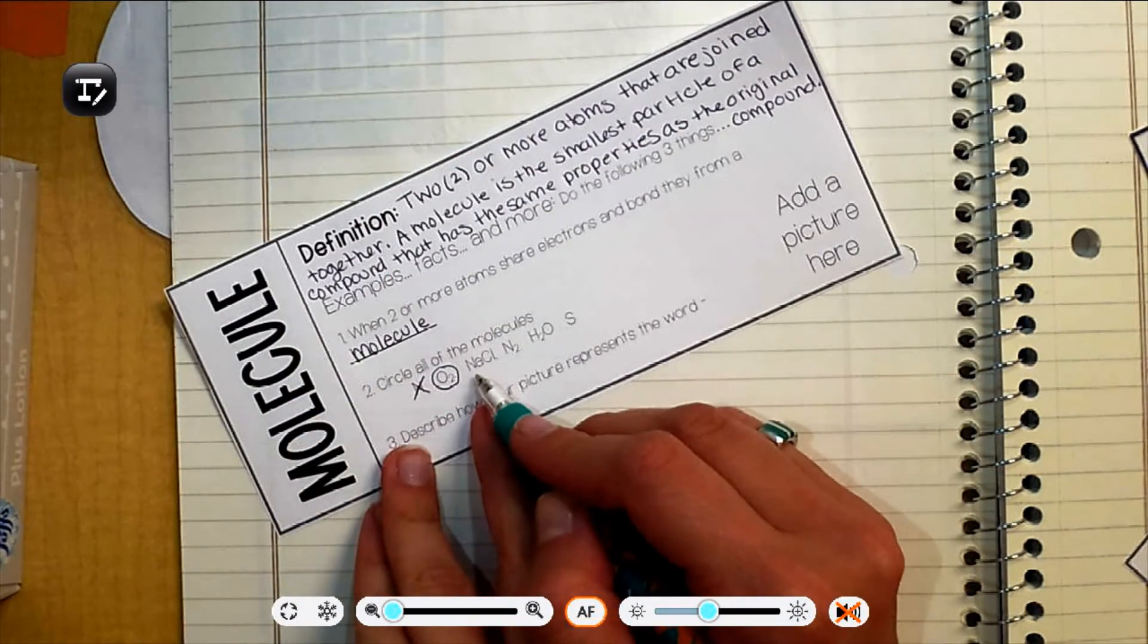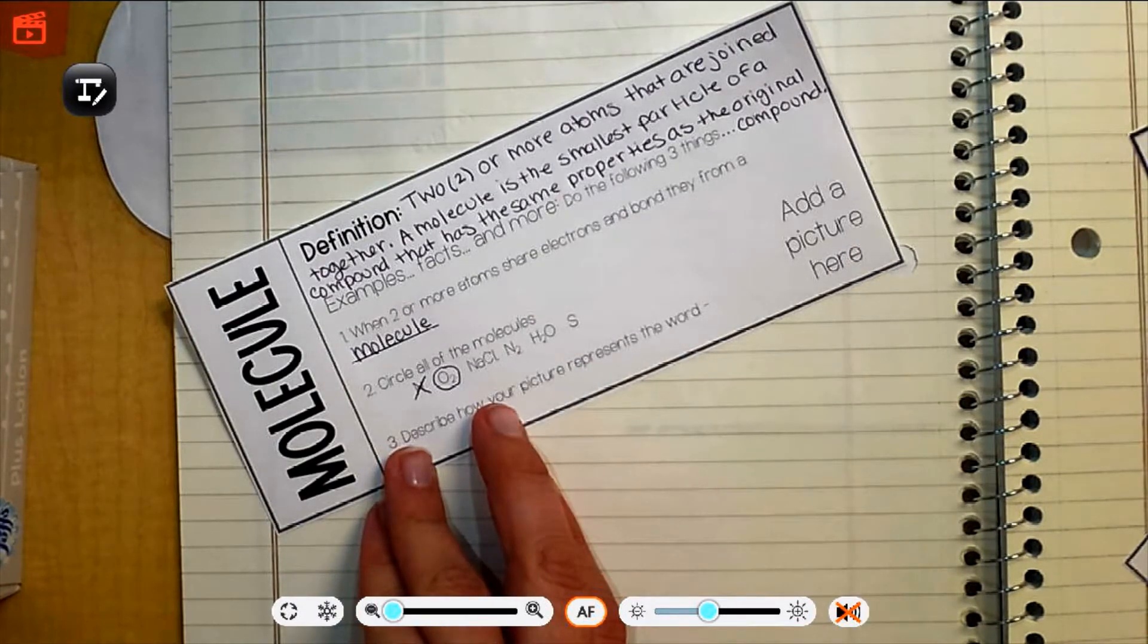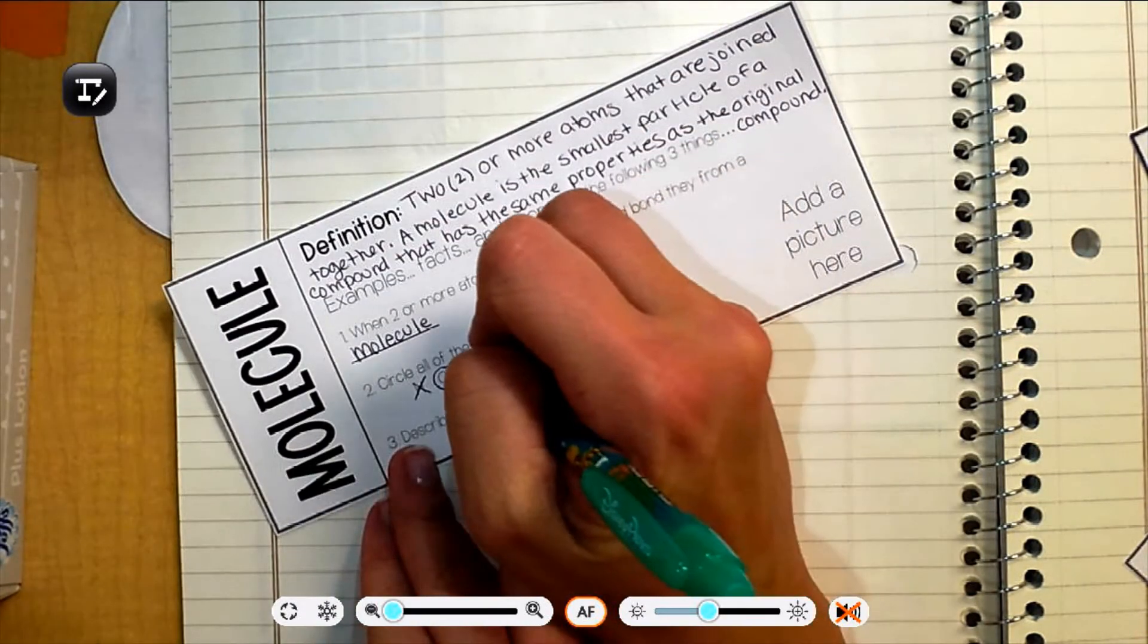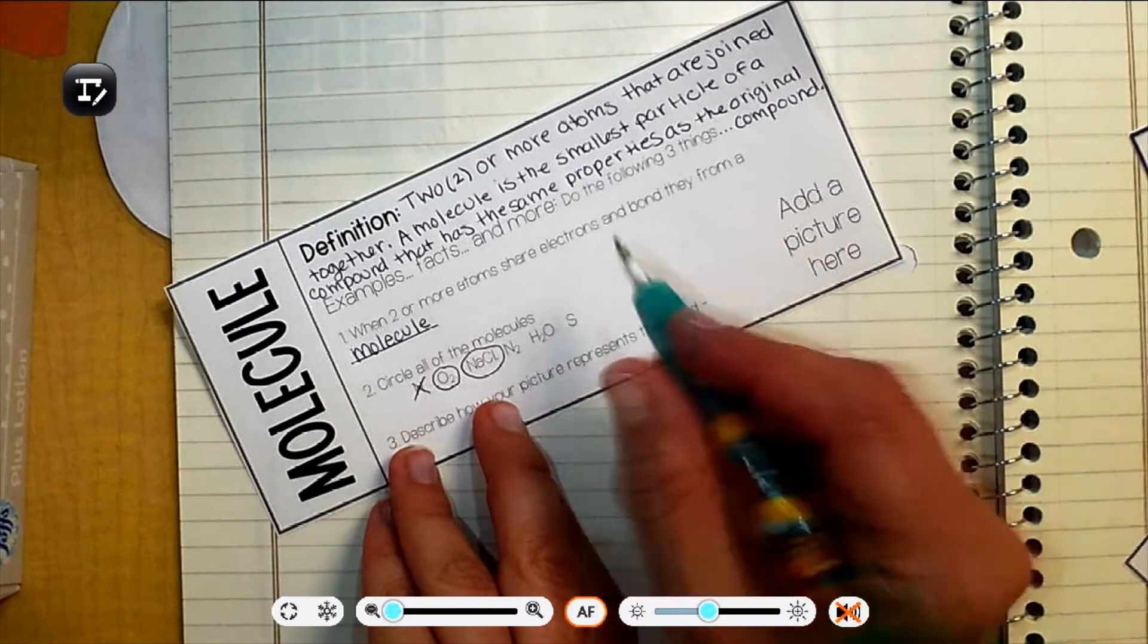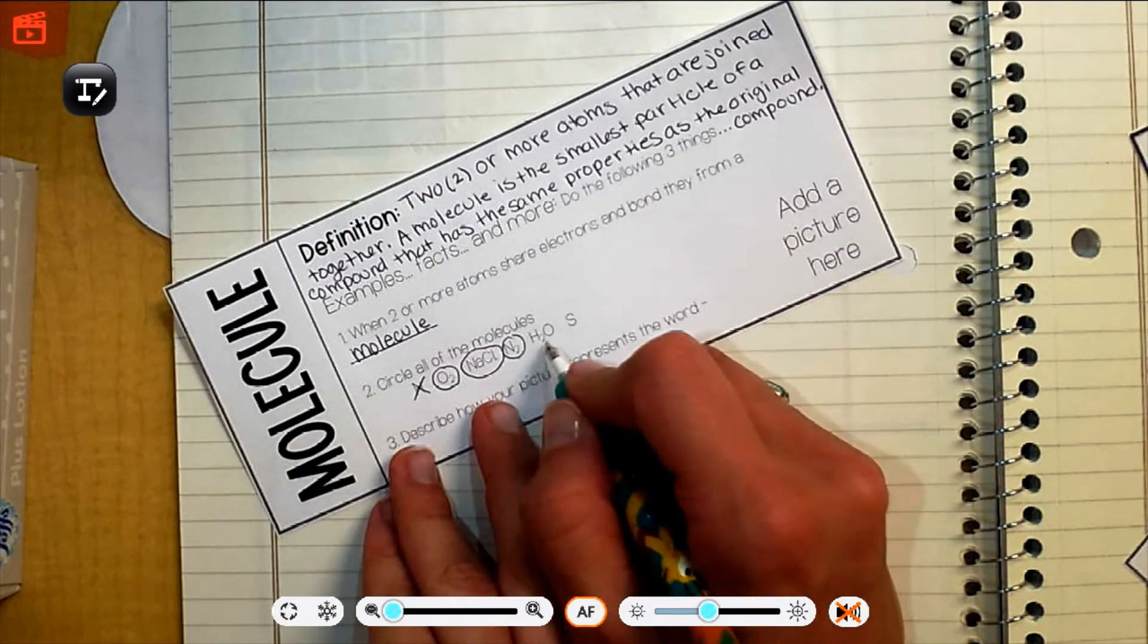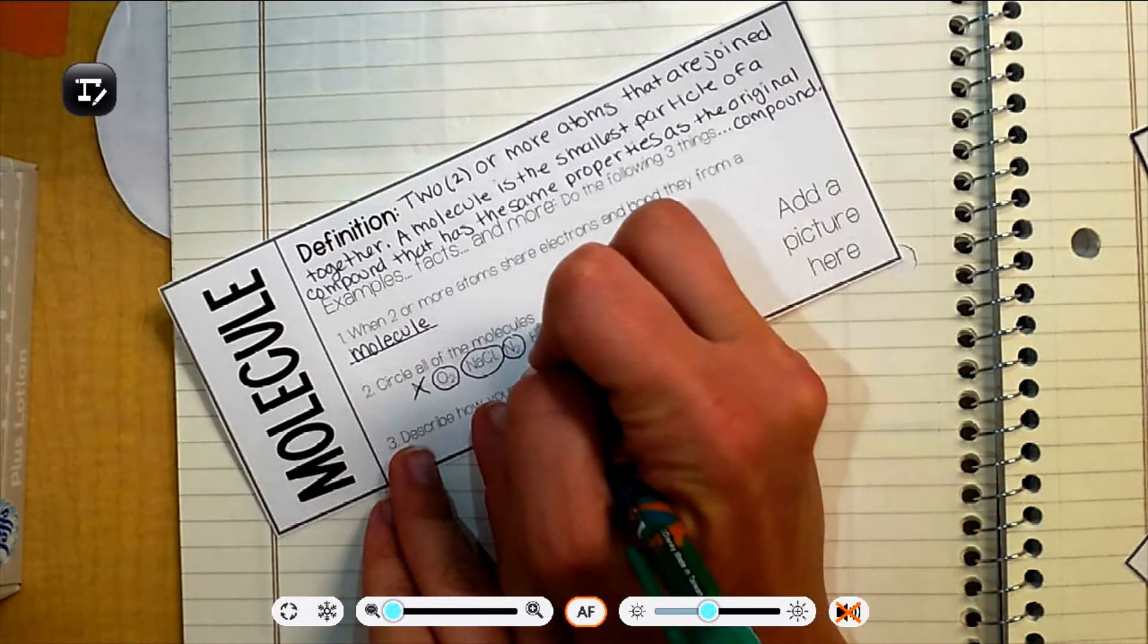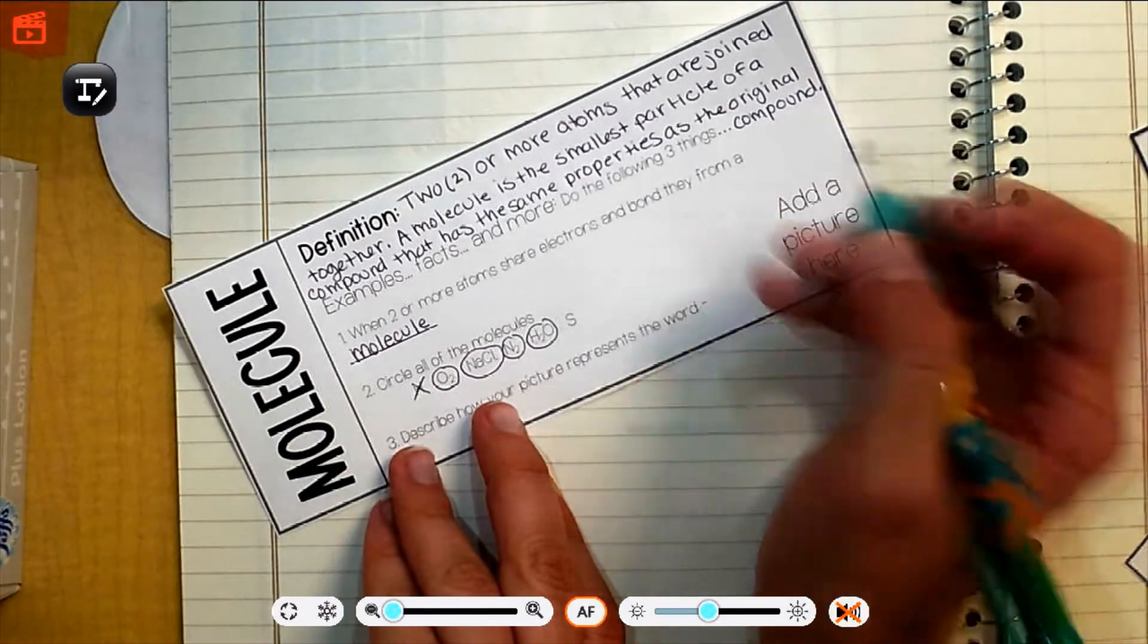NaCl. So it's one sodium and one chlorine. Yes, that's a molecule. It's two atoms. N2. So it's two atoms of nitrogen. Yes. H2O. That's three atoms. Two of hydrogen, one of oxygen. Yes. Sulfur by itself. No.